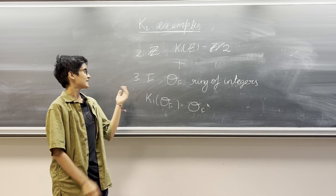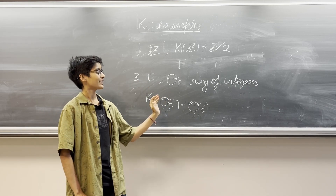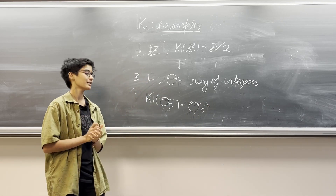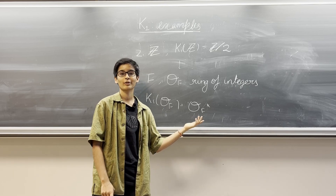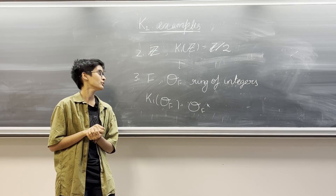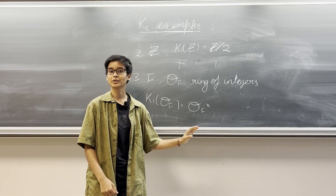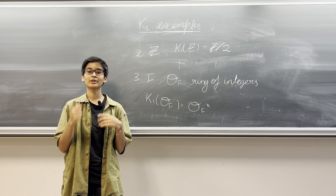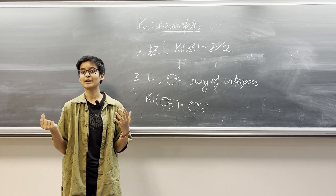For the next example, let us consider a number field F and let us look at O_F, its ring of integers. In this case we get the same result that K1 of O_F is all the invertible elements of O_F. Now it is not always true that the first K group of a commutative ring R is just its invertible elements. But we do know that for any commutative ring R, the first K group contains all of its invertible elements.